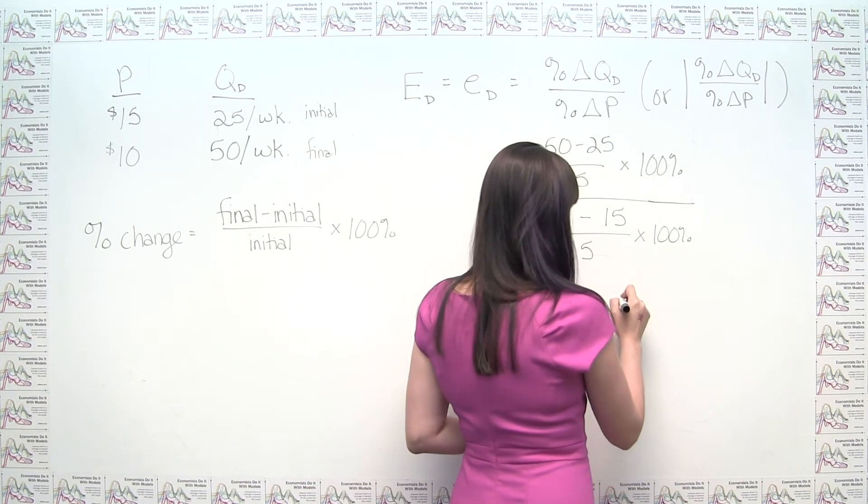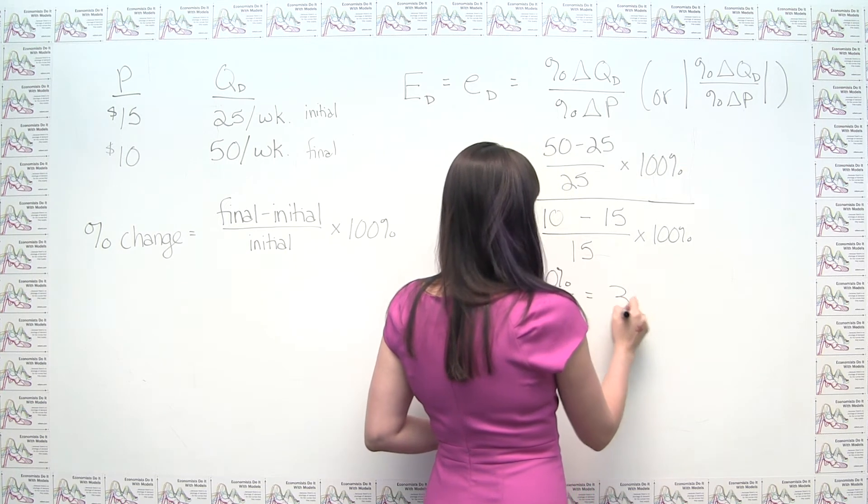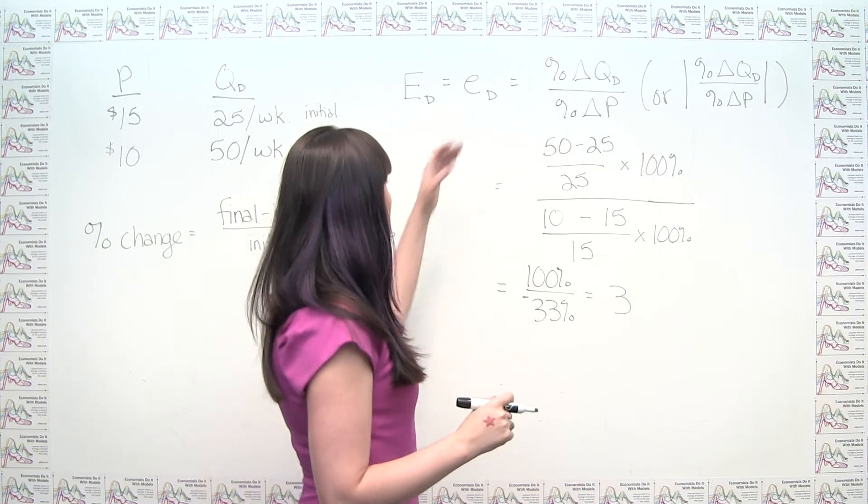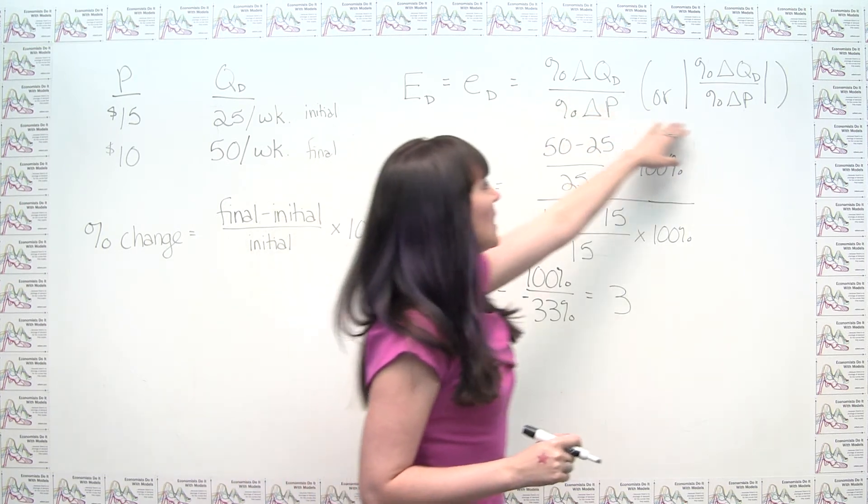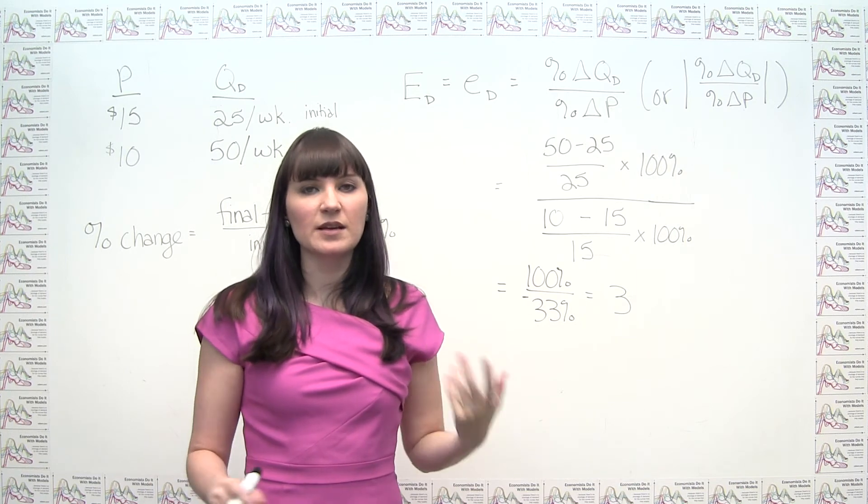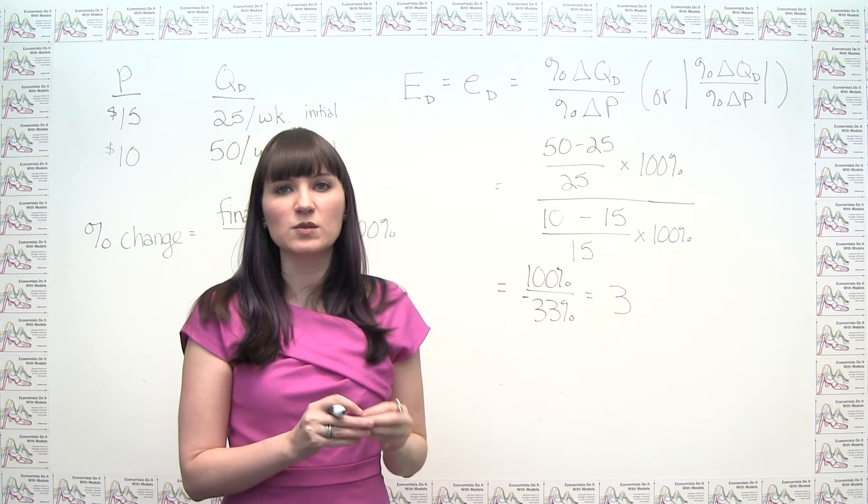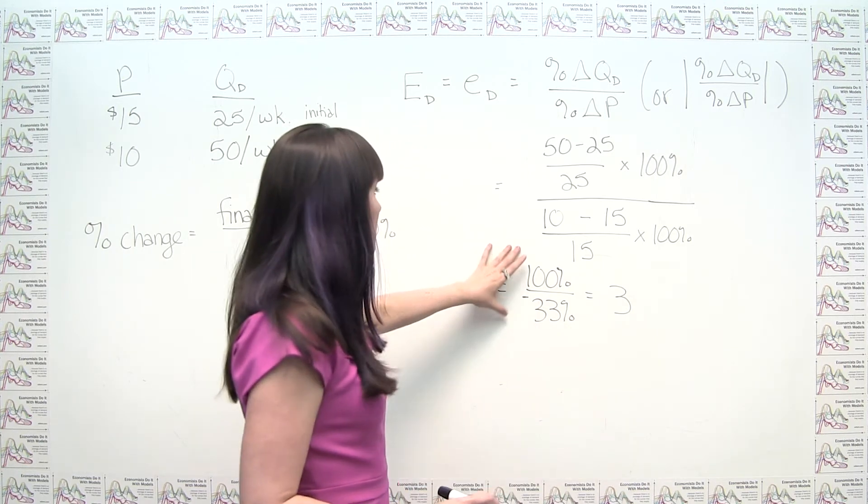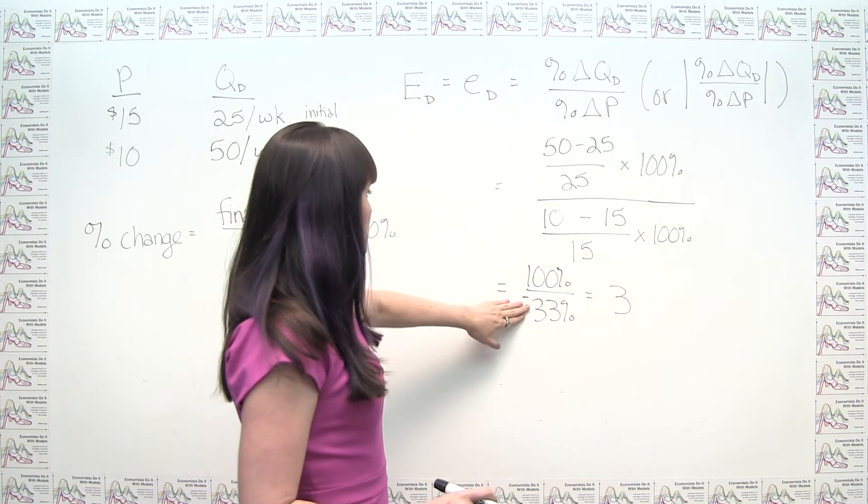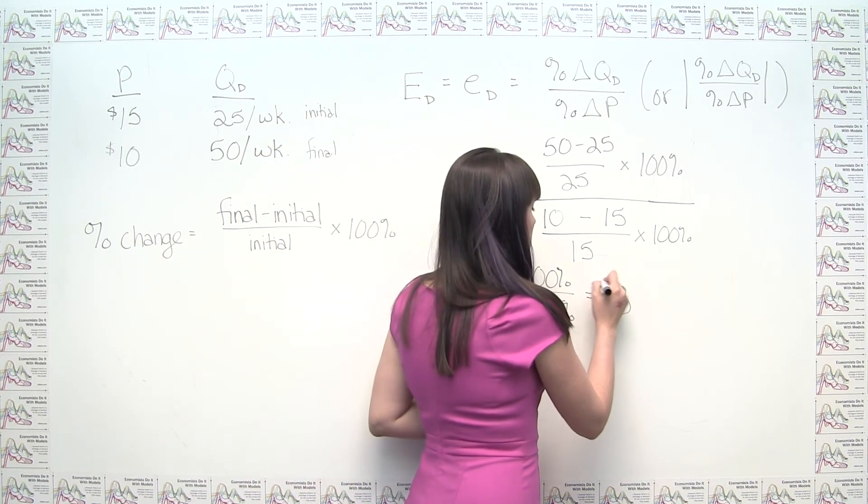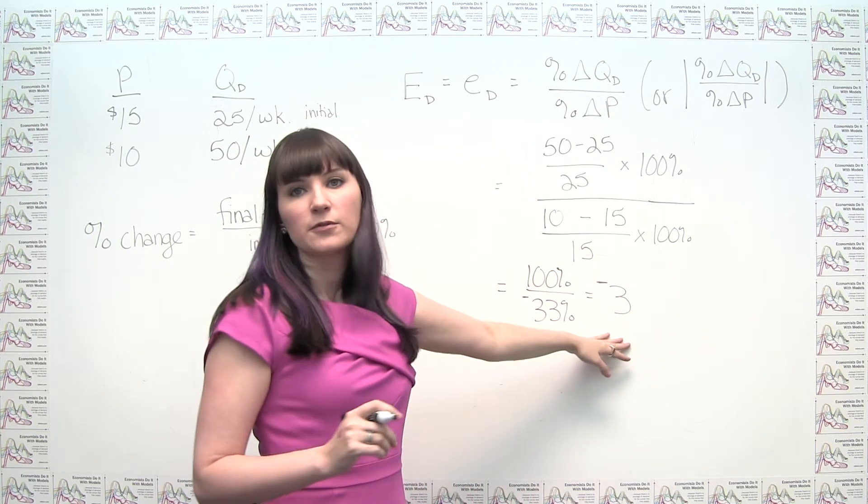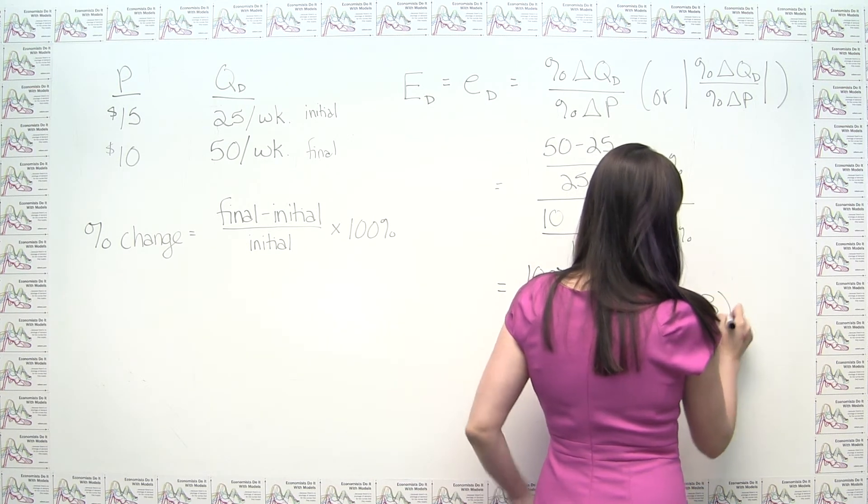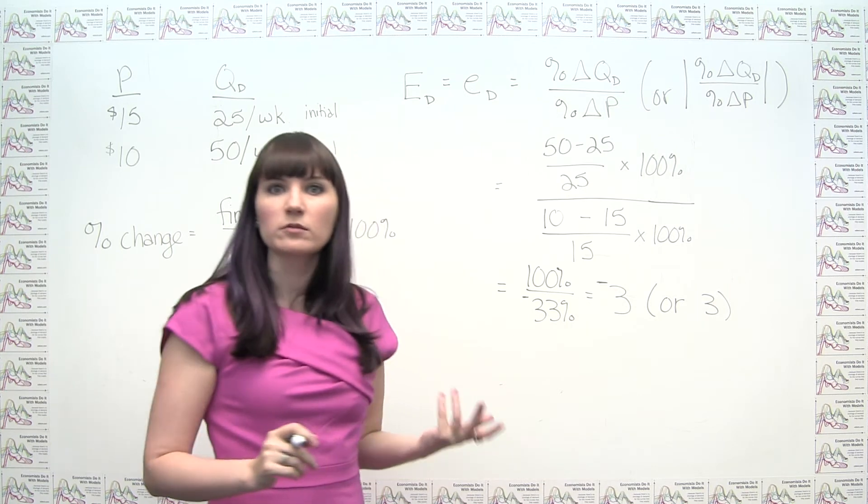And notice, even here, I'm somewhat lazy about my negatives, because I'm used to taking the absolute value at the end, which makes keeping track of the negatives kind of pointless, or irrelevant. But since I wasn't doing that, I want to be super careful. This is actually a negative number. So technically, I get negative 3 out of this. If I'm expected to report the absolute value, I would just report 3.